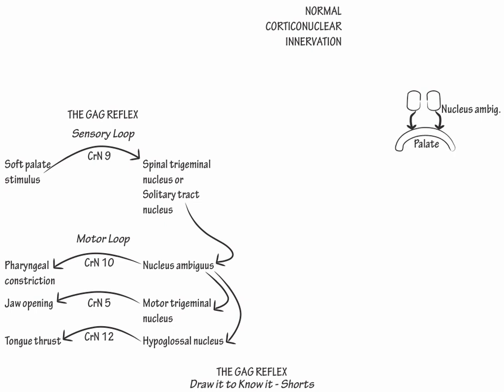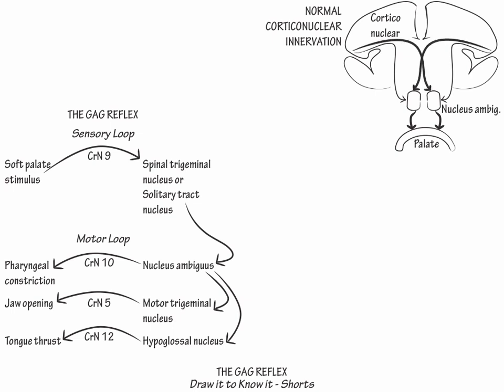Now show that each cerebral hemisphere projects corticonuclear fibers to each nucleus ambiguous, but show that most corticonuclear fibers go to the contralateral nucleus.